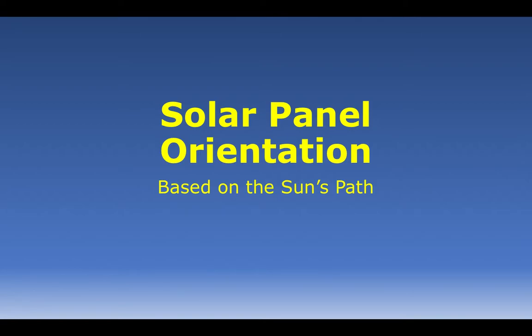If you are going to have some solar panels installed on your rooftop or as a pole mount somewhere on the property, without a doubt one of the most important things about the actual solar array is making sure that the solar panels themselves are oriented in the right direction. That solar panel orientation is based solely on understanding the sun's paths and how they change throughout the course of the year. The goal is to have the best tilt angle that would maximize the amount of energy you'd get from the solar panels.